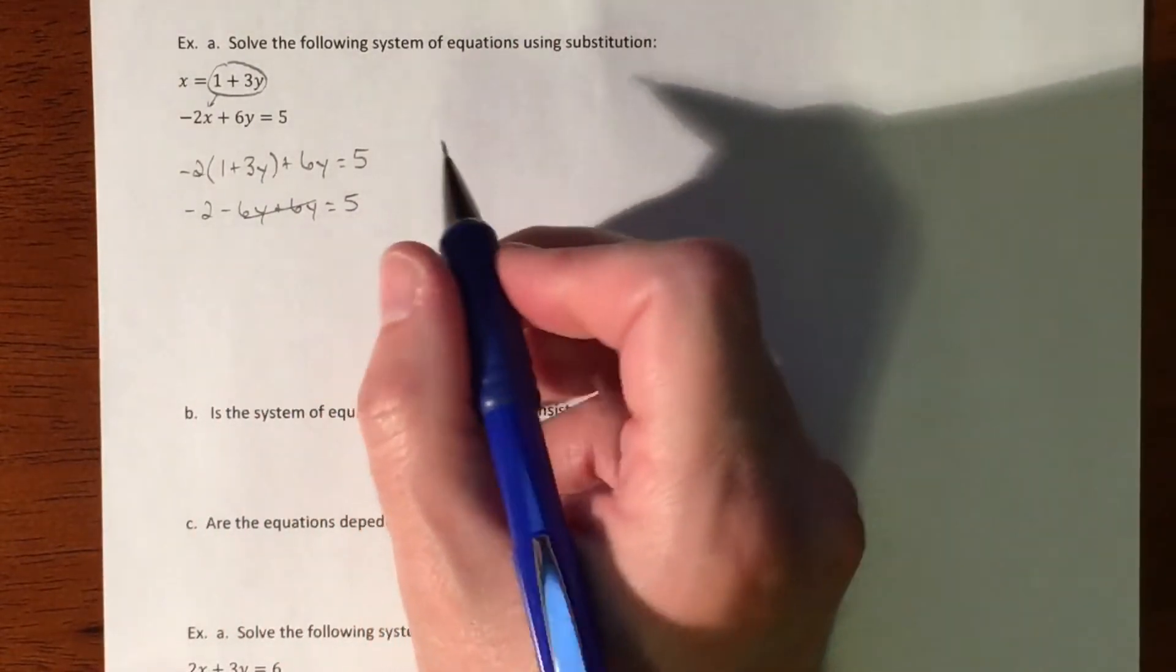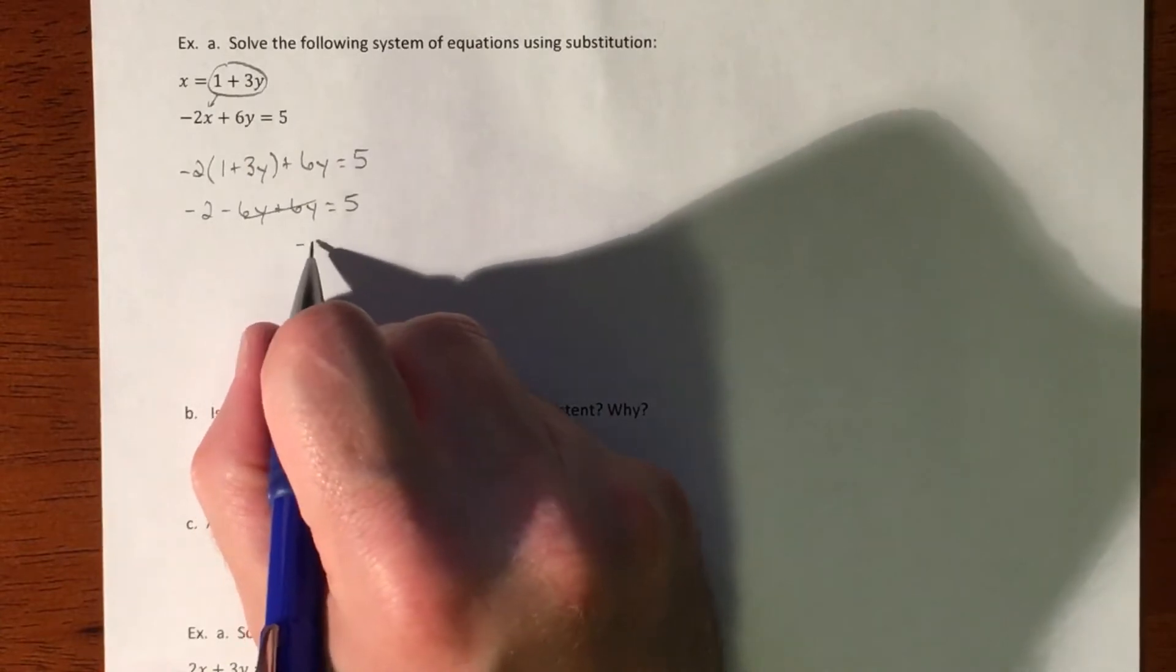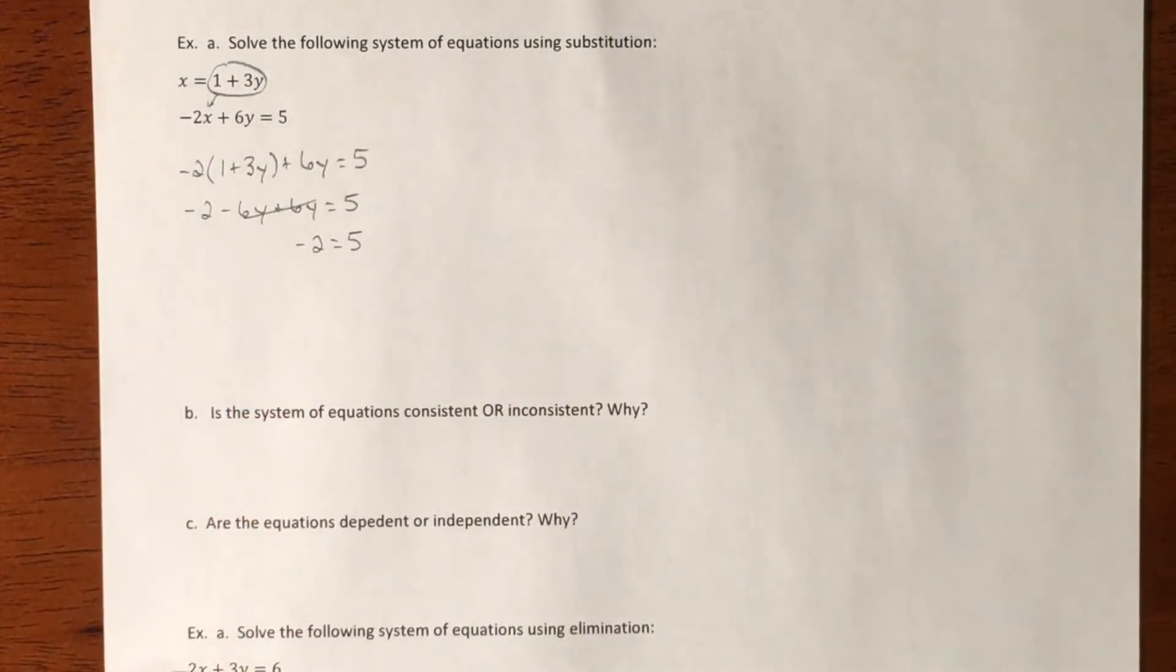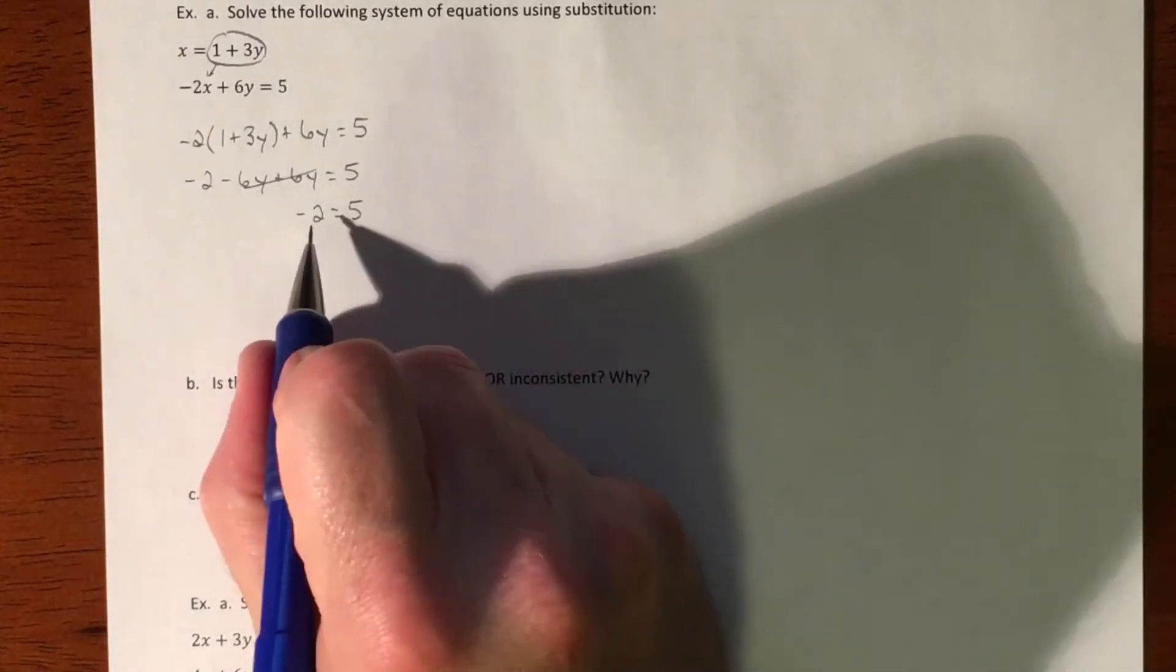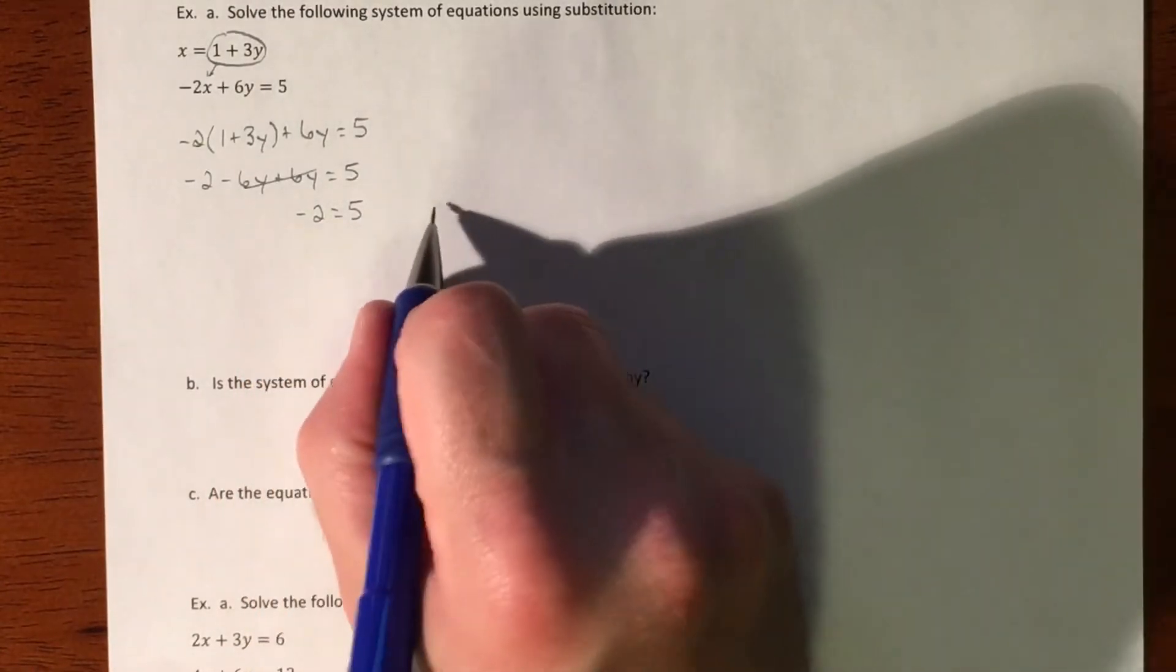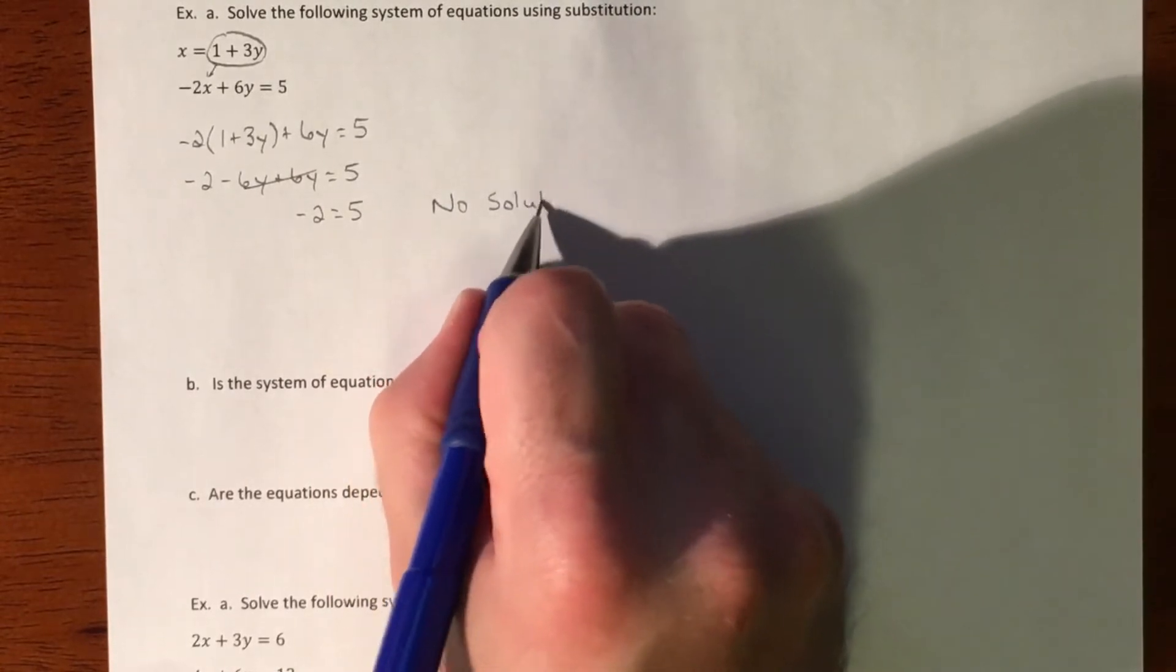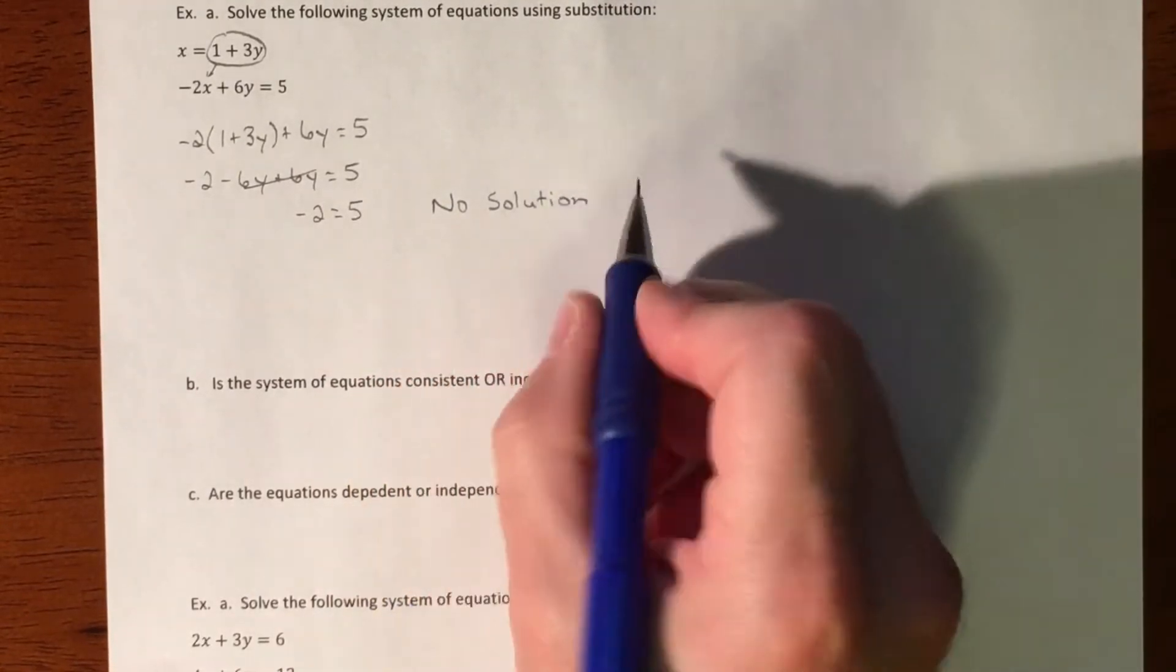It just happened, so this actually means something. This is a special case, which means either we're about to get infinite solutions or no solution. My shortcut for this is: does negative two equal five? No, so then it's no solution. That's our answer.